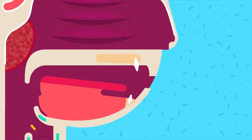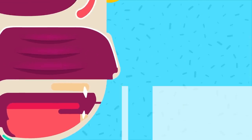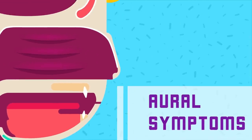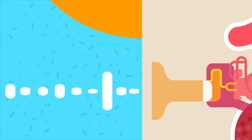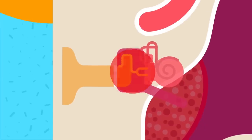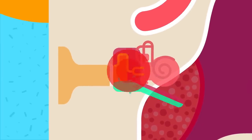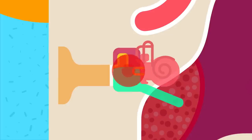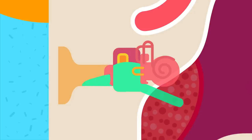5. Voice change — toneless and loses nasal quality due to nasal obstruction. Ear symptoms: 1. Tubal obstruction — adenoid mass blocks the Eustachian tube, leading to retracted tympanic membrane and conductive hearing loss. 2. Recurrent attacks of acute otitis media may occur due to spread of infection via the Eustachian tube. 3. Chronic suppurative otitis media may occur if otitis media fails to resolve in the presence of infected adenoids.